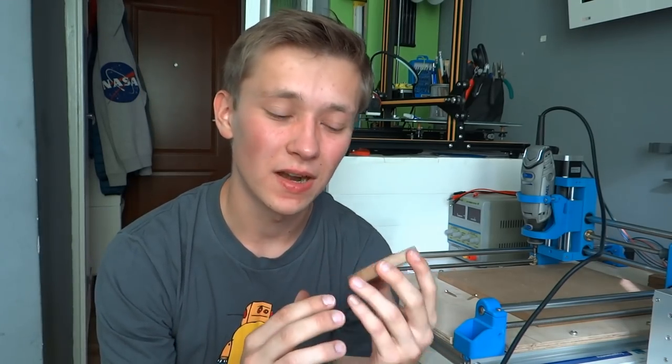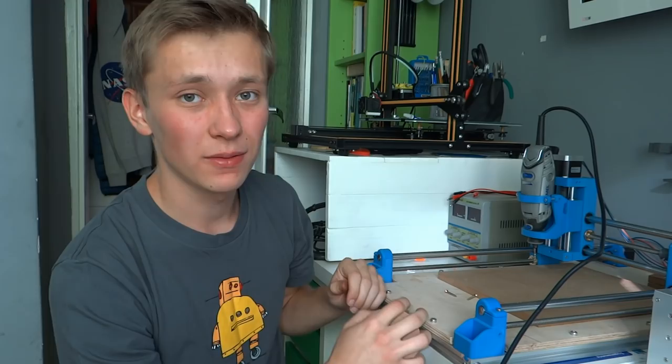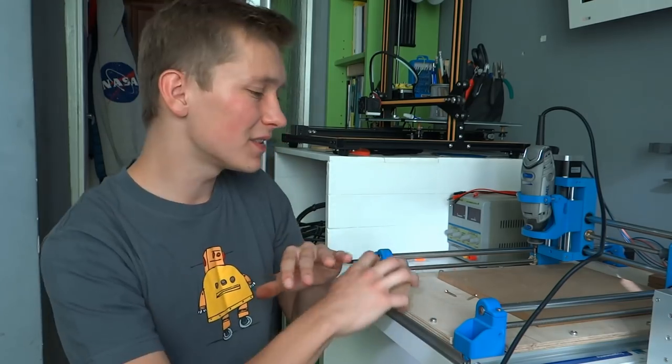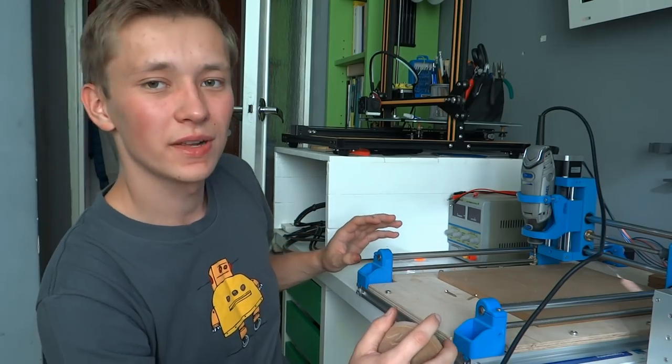MDF is a really good material to start milling because it is soft so you can machine it pretty easily, but there is a lot of dust so you really need a vacuum cleaner to clean all of this up. There is dust everywhere right now and I had to clean all of this up and I'm not really happy about it.